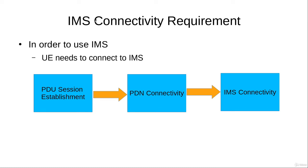In order to use the services of an IMS system, a user equipment first needs to connect to the IMS system. To do that, the user equipment would first establish a PDU session, and using that PDU session it would connect to the public data network or the packet network. Since the IMS is a part of the public data network, that user equipment would connect to the IMS system.